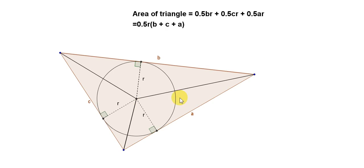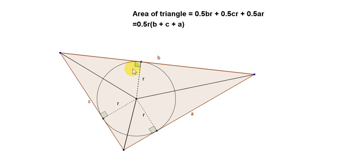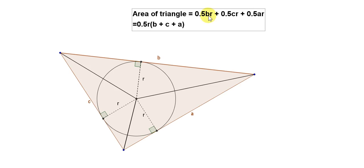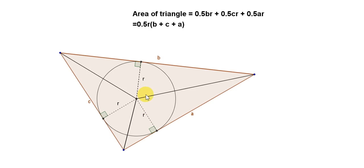To get the area of the big triangle, we add up the areas of the three inside triangles. The top triangle has base B and perpendicular height R, so its area is ½BR. Similarly, the next triangle has area ½CR, and the third triangle has area ½AR.